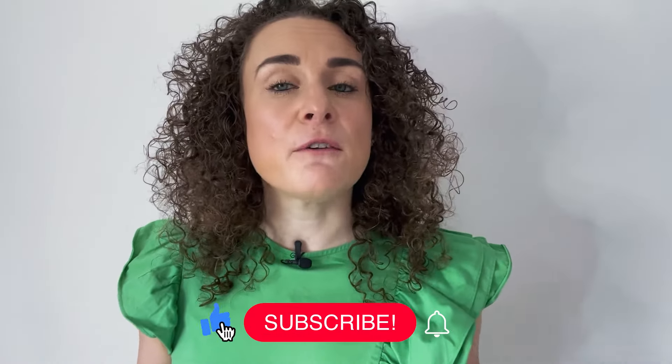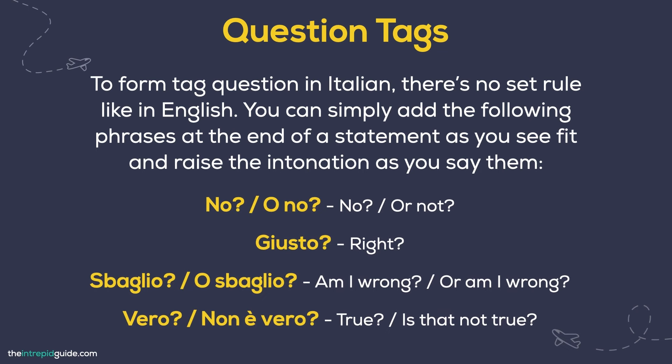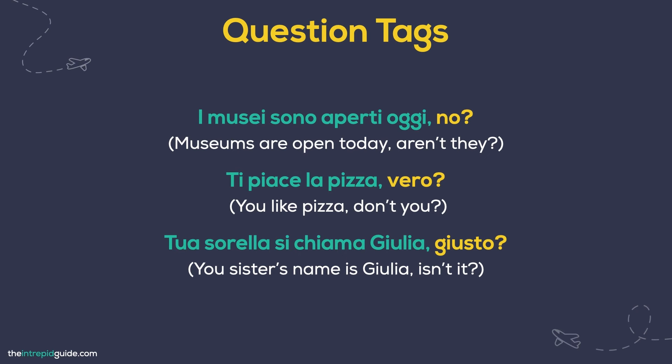Another common type of question in speaking is question tags. We use question tags to verify information that we think is true or correct by adding a question tag at the end of a statement to turn it into a question. In English we say things like isn't it, are you, don't you, didn't she, and so on. To form question tags in Italian, there's no set rule like in English. You can simply add the following phrases to the end of a statement with a rising intonation: no, o no, giusto, sbaglio, o sbaglio, vero, non è vero. Examples: I musei sono aperti oggi, no? Museums are open today, aren't they? Ti piace la pizza, vero? You like pizza, don't you? Tua sorella si chiama Giulia, giusto? Your sister's name is Giulia, isn't it?